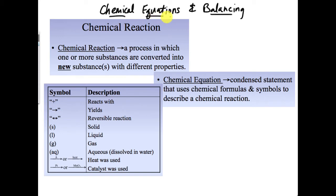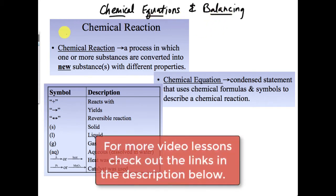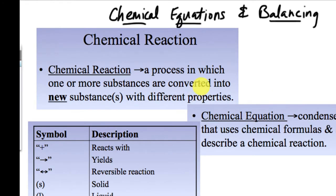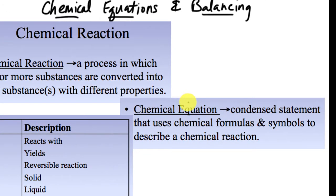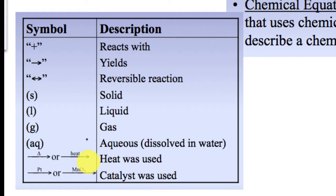Today's video is on chemical equations and balancing chemical equations. Chemical reactions are the actual processes where substances are converted into new substances — that's the key behind a chemical reaction. In order to talk about those reactions, we convert them to chemical equations. Chemical equations are our way of describing what we see happening in reactions without writing all the words, using the chemical formulas from the last chapter.